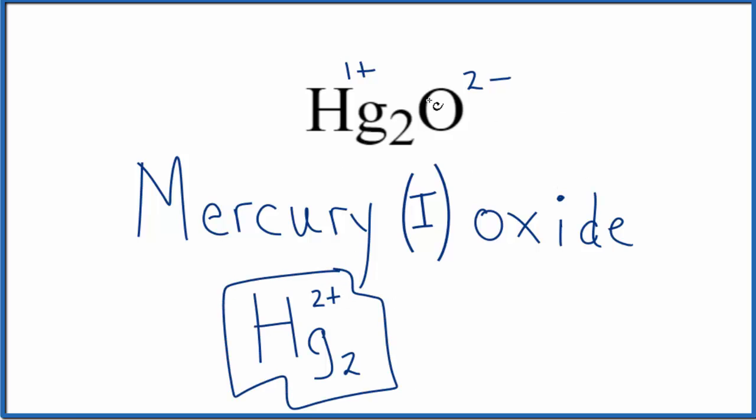That doesn't really matter so much as we write the name here for Hg2O, but with other compounds with mercury(I), keep that in mind. This is Dr. B with the name for Hg2O. It's mercury(I) oxide. Thanks for watching.